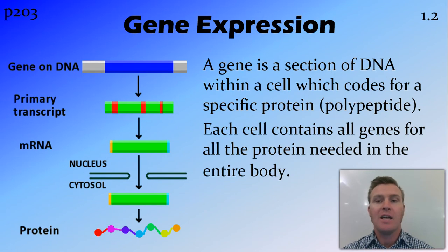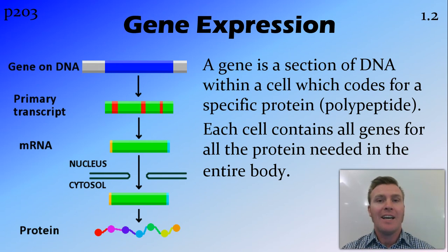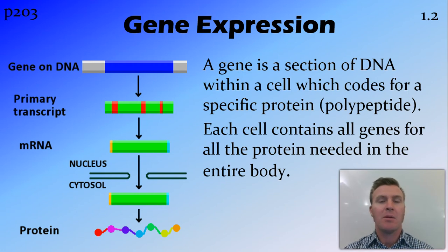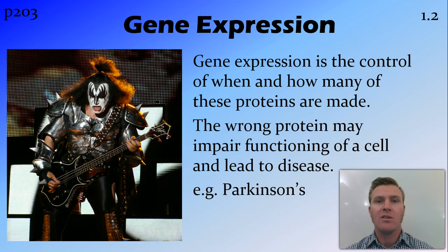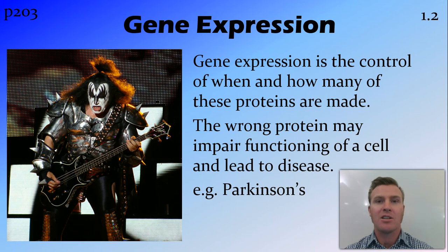Firstly, gene expression. A gene is a section of DNA, which is found within the cell, and it codes for a specific protein or polypeptide. However, each cell contains every single gene that codes for every single protein that needs to be made around the entire body. So there are a lot of genes in each cell. Not all of them need to be used, and gene expression is the control of when and how many of these proteins are actually made from that blueprint which is in each cell.